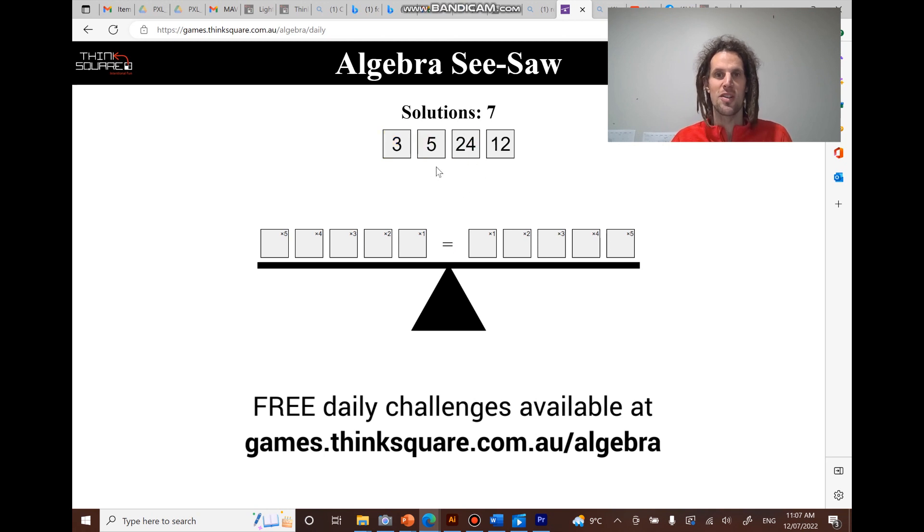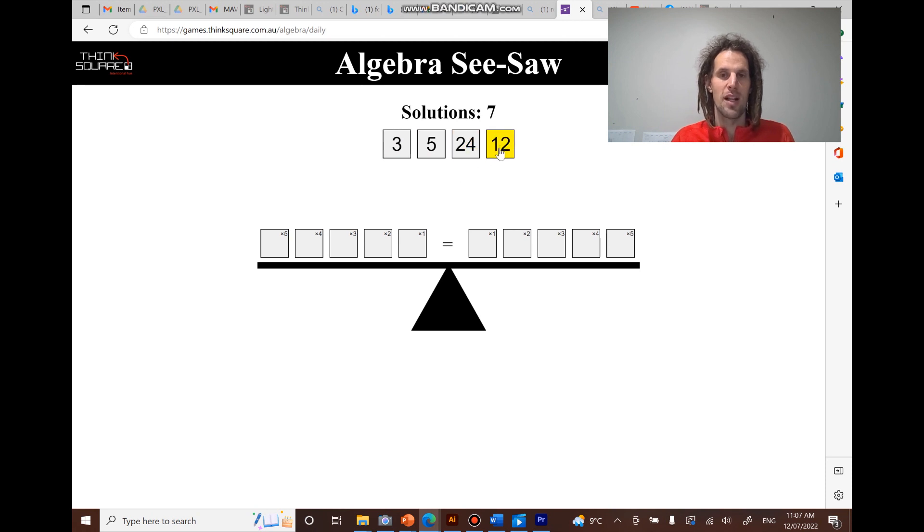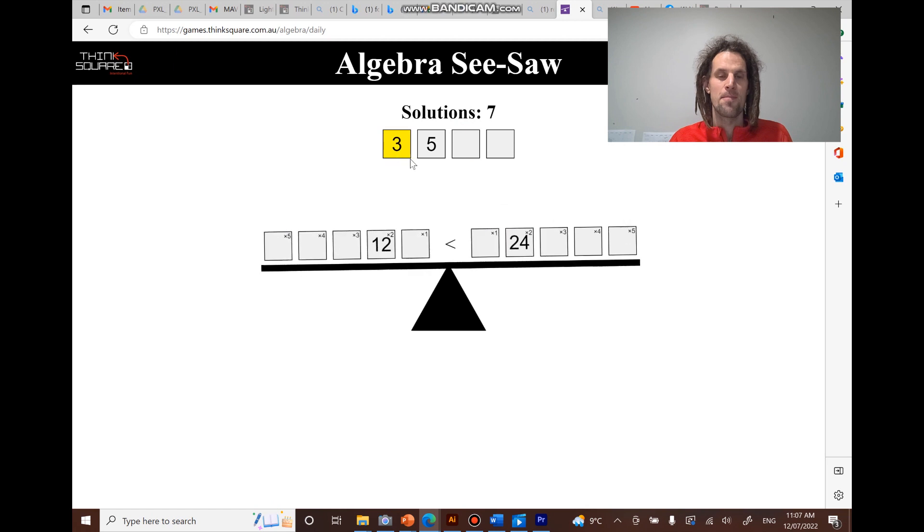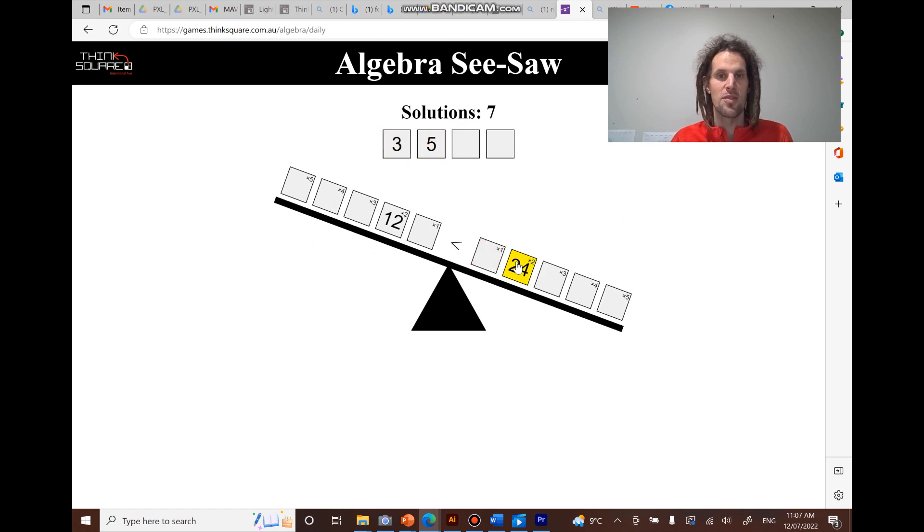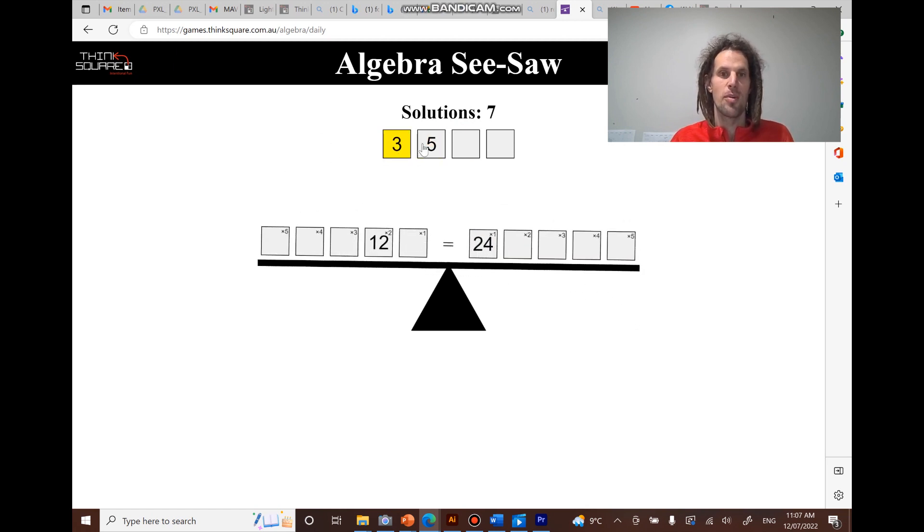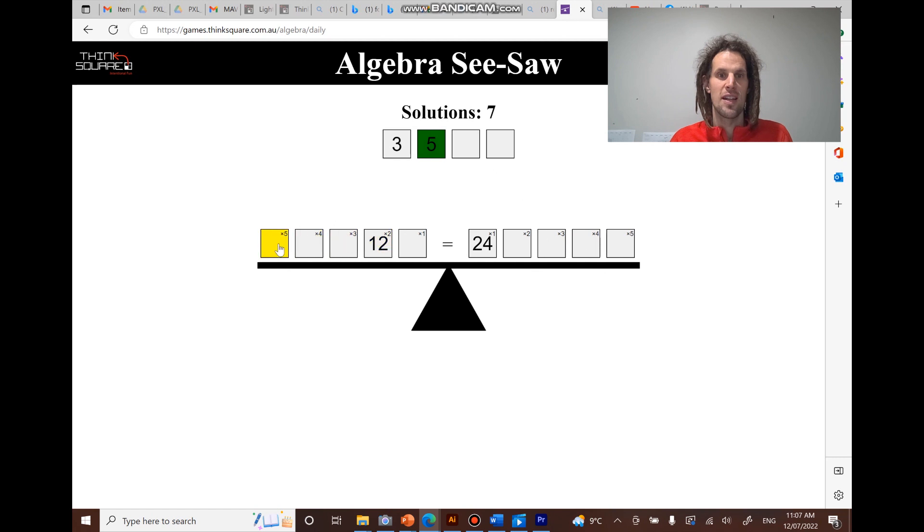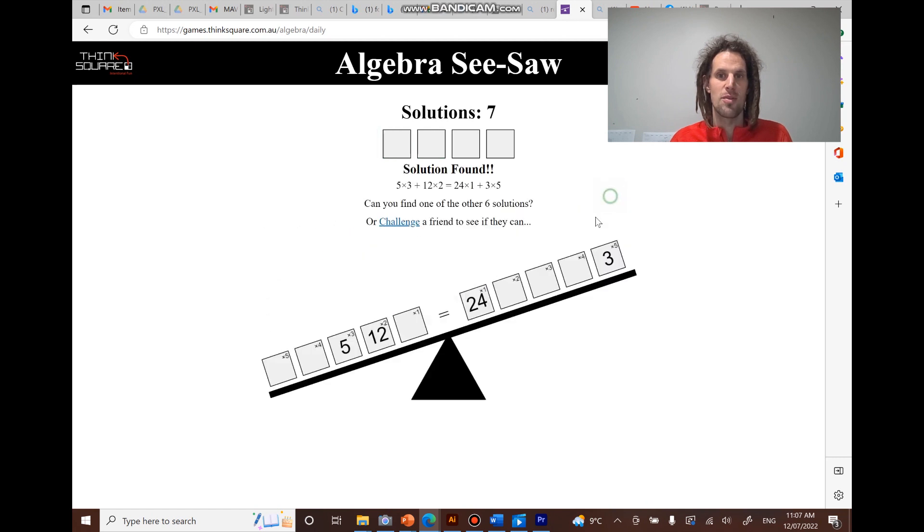And you can also use it as a notice and wonder prompt. Here I notice that 12 can balance with 24, so maybe I'll just do that to start with. And as long as 3 can balance with 5, I'll be right. So I can do that by making 5 times 3 and 3 times 5.